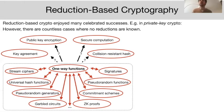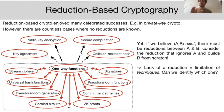However, in countless other cases we are not aware of any reduction proving the existence of one primitive based on another. For example, we don't know if we can base public encryption on the existence of one-way functions. This is unsatisfying, especially because such reductions must exist: if we believe one-way functions exist and public encryption also exists, there has to be a reduction basing public encryption on one-way functions.